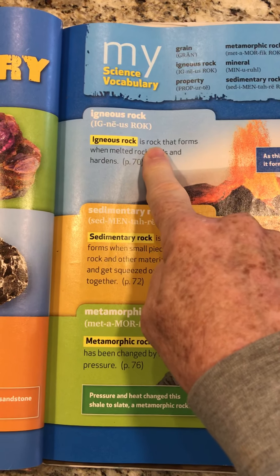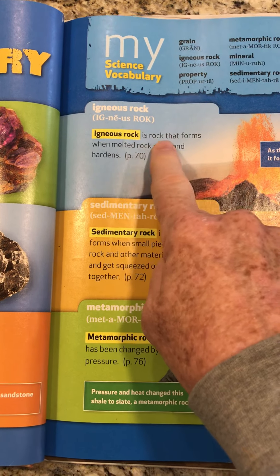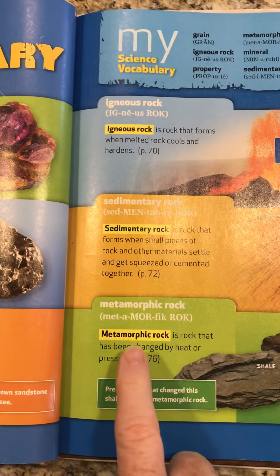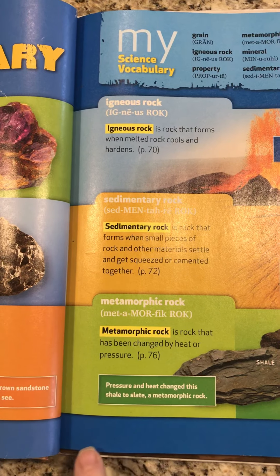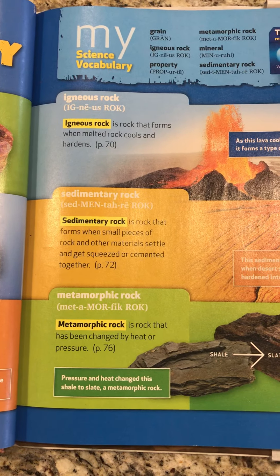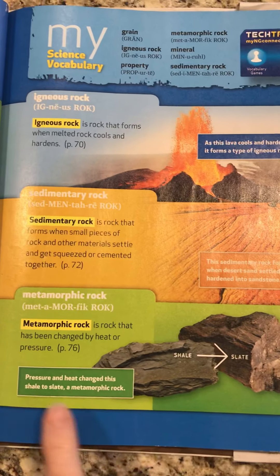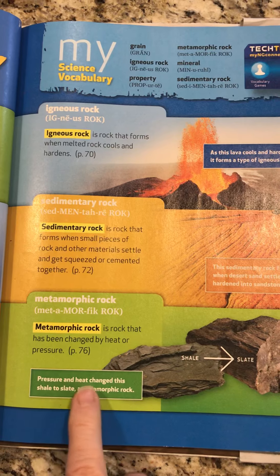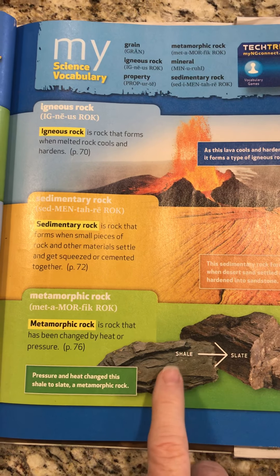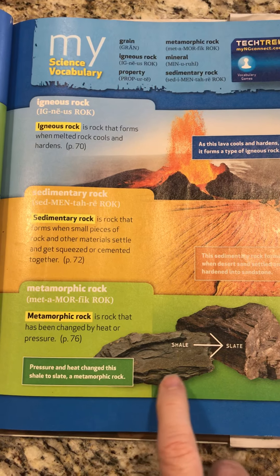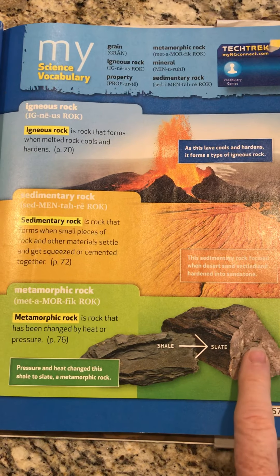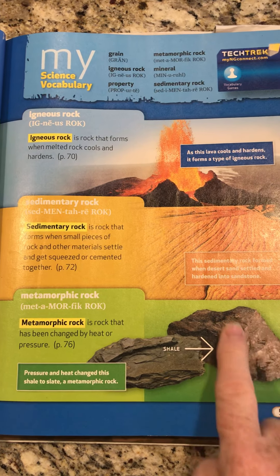The last kind is metamorphic. Metamorphic rock is rock that has been changed by heat or pressure. Heat changed this shale, which is a sedimentary rock with layers, into metamorphic rock called slate. Chalkboards in the old days used to be made out of slate.